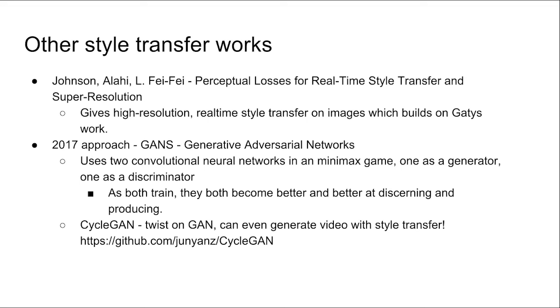Here are some other style transfer works we found interesting while doing research for our project. Johnson's work on perceptual losses for real-time style transfer and super-resolution gives high-resolution real-time style transfer on images, which builds upon the work that Gatys made. The 2017 approach is to use GANs, or Generative Adversarial Networks, where one uses two convolutional neural networks in a sort of minimax game, one as a generator and one as a discriminator. As they both train, they both become better and better at discriminating and producing. CycleGAN is a good example of this. Here, object recognition and a twist on Generative Adversarial Networks can generate video with style transfer.